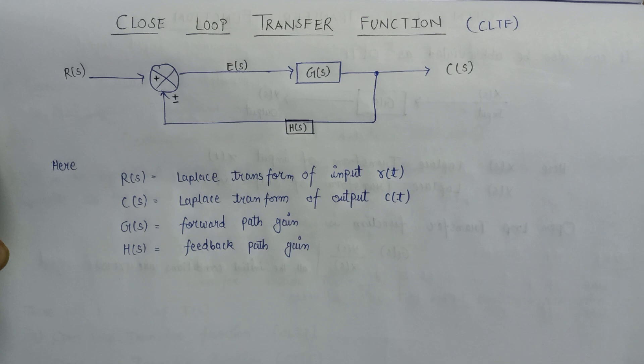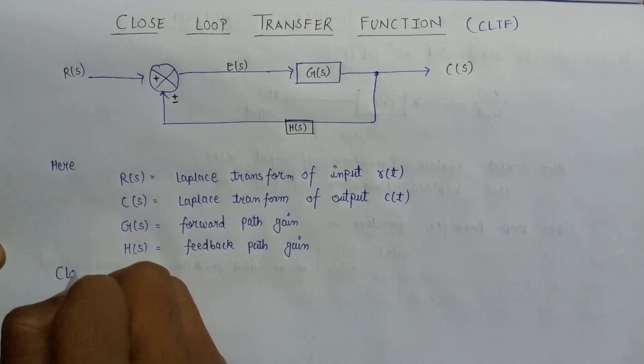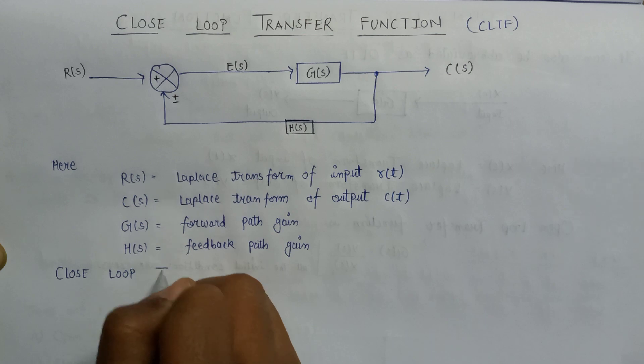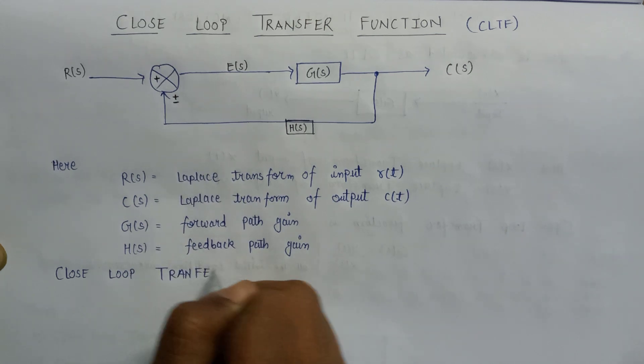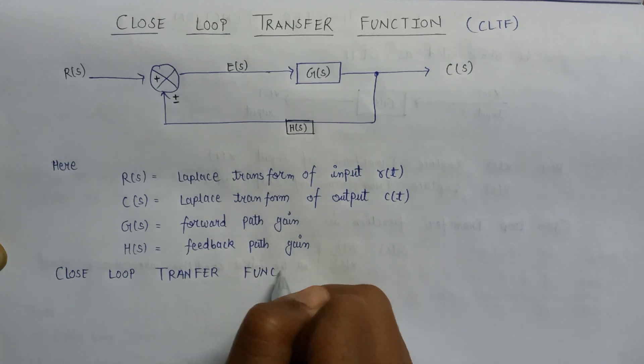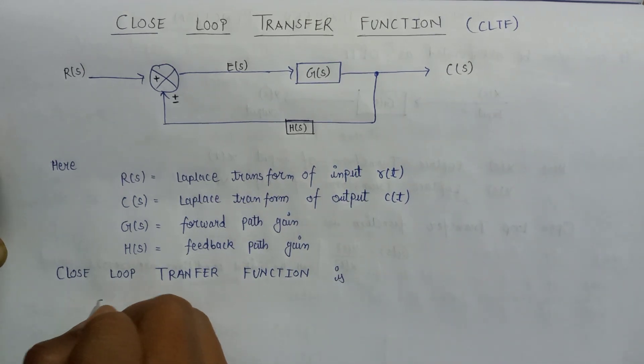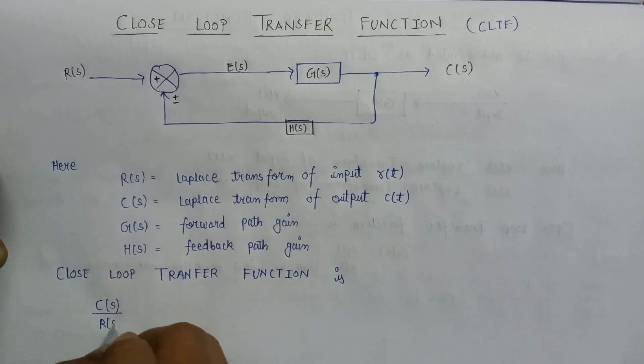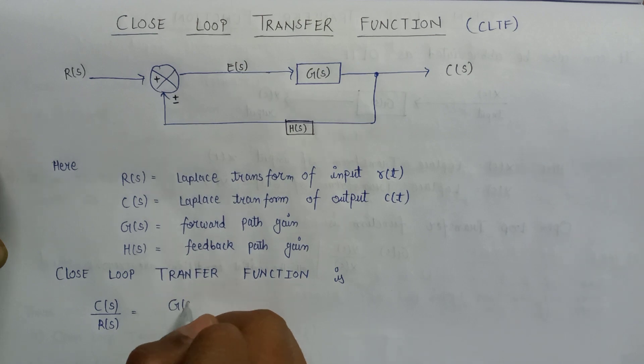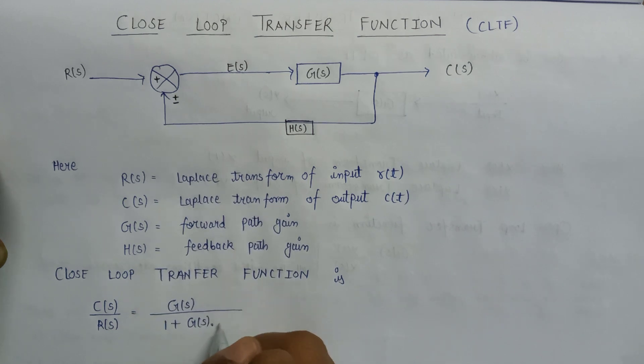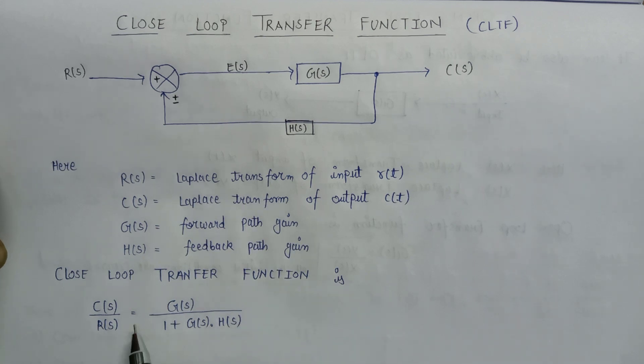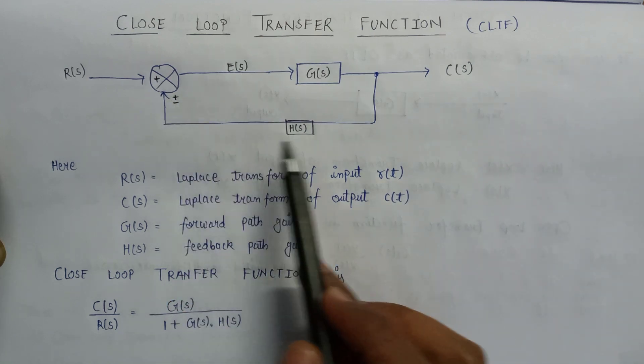Then the formula for the basic calculation of closed loop transfer function: C(s) over R(s) will be equal to G(s) divided by 1 plus G(s) into H(s). This is the formula for the basic calculation of closed loop transfer function if there is negative feedback applied to this control system.